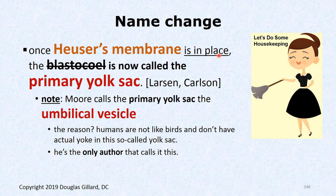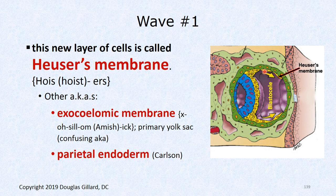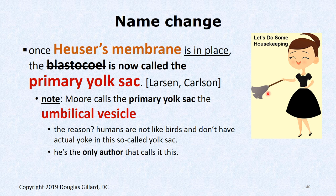Some housekeeping on name changes: before Heuser's membrane forms, the cavity is called the blastocele of the blastocyst. But once Heuser's membrane completely surrounds this cavity, it changes names and becomes the primary yolk sac. Note: one board book for chiropractors calls it the umbilical vesicle, but all other authors call it the primary yolk sac.